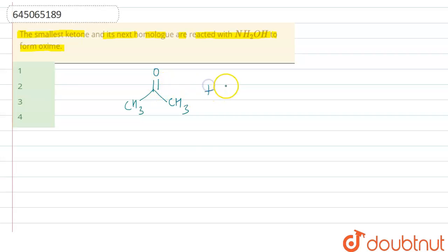When it reacts with NH2OH, what will happen? There is a loss of water molecule and we will get this type of product, and this product is called oximes: CH3-CH3, here we have double bond nitrogen, and in this position we have OH and here we have lone pair. This is our oximes.